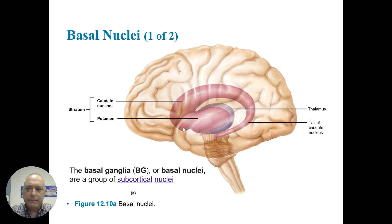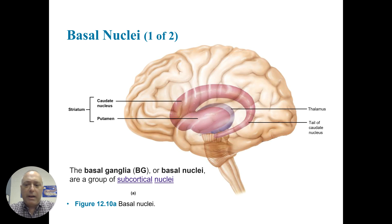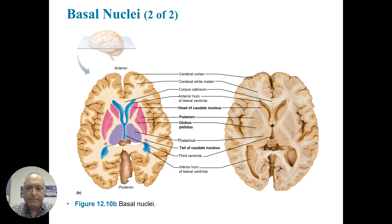Deep within the brain is the basal nuclei — the striatum, composed of the caudate and the putamen, as well as the thalamus and then the tail of the caudate nucleus. The basal ganglia, or basal nuclei, is a group of subcortical nuclei — gray matter that is deep within the brain, not on the surface like your cortical gray matter. Here's another look at the basal ganglia, showing the putamen, the globus pallidus, the caudate, and you can also see the third ventricle.